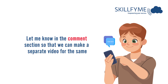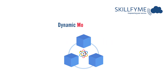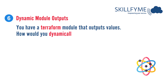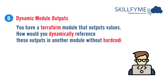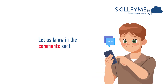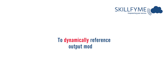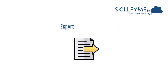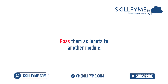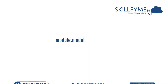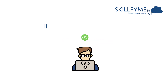The next question is related to dynamic module outputs: you have a Terraform module that outputs values — how would you dynamically reference these outputs in another module without hard-coding? To dynamically reference module outputs, export the module's outputs and pass them as inputs to another module. For example, reference module.module_one.output_id in another module. If working with multiple values, use dynamic maps to handle them flexibly.